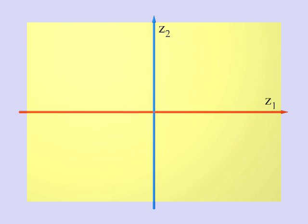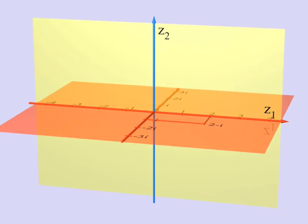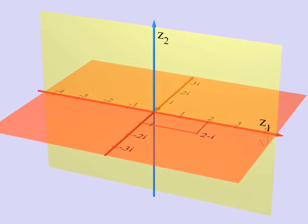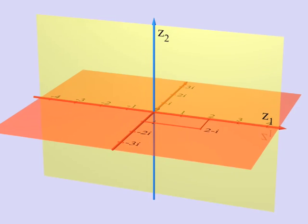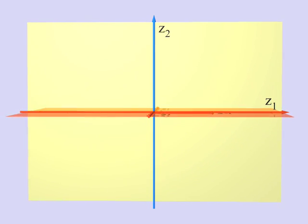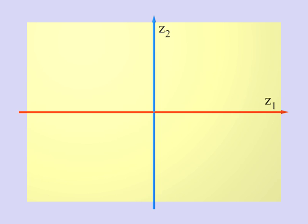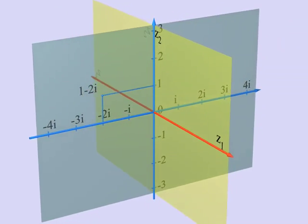Each of the axes is a complex line, so that each point on these axes has one coordinate which is a complex number. For instance, here you see the point 2−i on the first axis. The same is true for the other axis, the y-axis. Here we can see the point 1−2i on this axis.